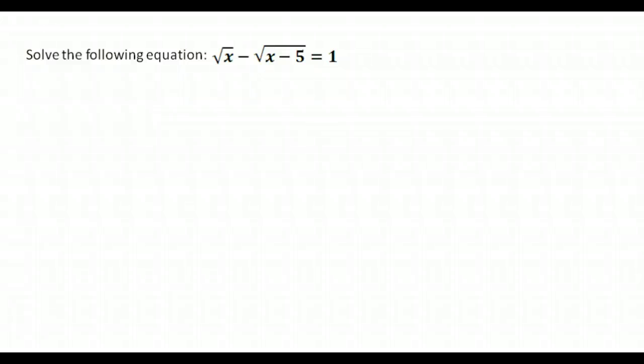Here is yet another example. Notice this one's a bit different because I have two different radicals. Our first step is supposed to be to isolate the radical. So in this case, you would just pick one and isolate it and then go from there. So let's say I decide to isolate this radical, the square root of x minus 5.